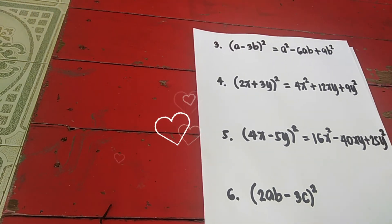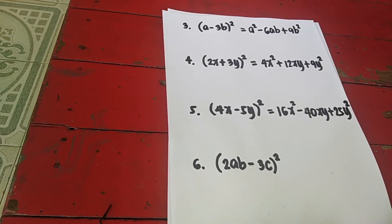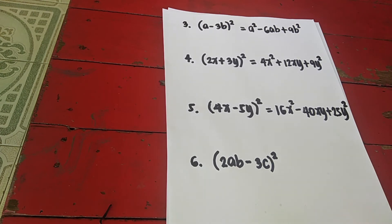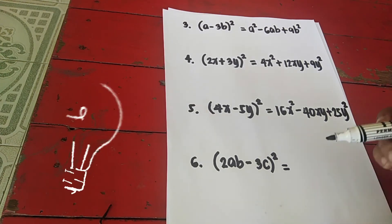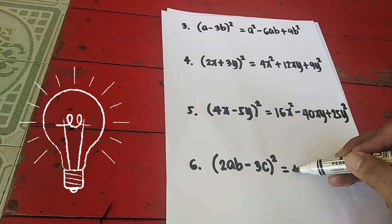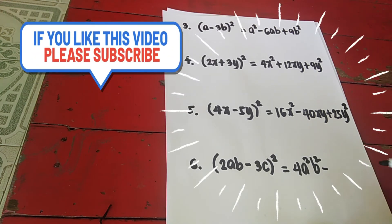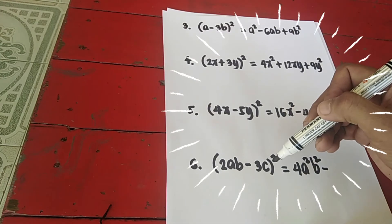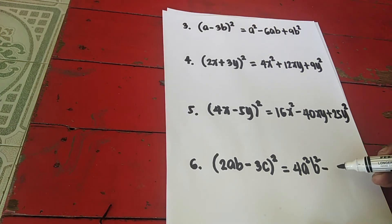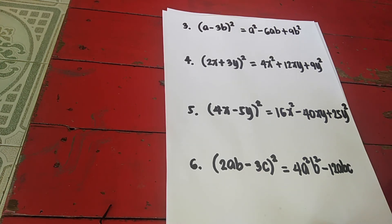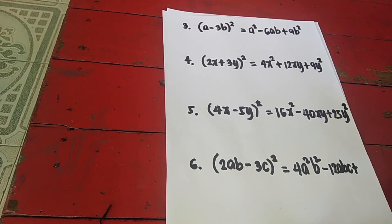Next, the last example: (2ab − 3c) squared. Apply the shortcut. Square the first term — 2ab times 2ab is 4a squared b squared. The middle term is minus. Multiply 2ab times 3c to get 6abc, times the constant 2, so that is 12abc. The third term is always positive — square 3c: 3c times 3c is 9c squared.